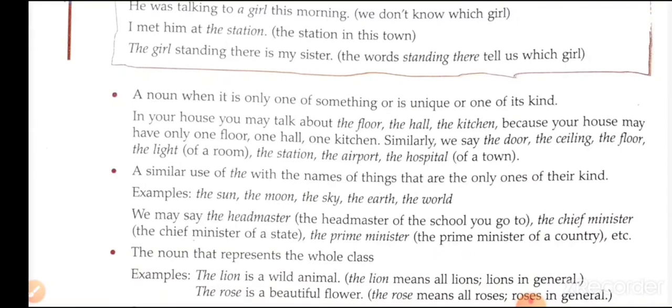We use 'the' before a noun when it is the only one of something, or is unique. In your house you may talk about 'the floor,' 'the hall,' 'the kitchen,' because your house may have only one floor, one hall, one kitchen. Similarly, we say 'the door,' 'the ceiling,' 'the floor,' 'the light of the room,' 'the station,' 'the airport,' 'the hospital' of a town.